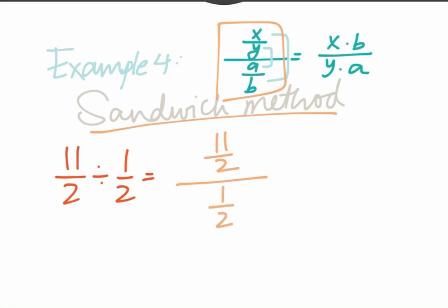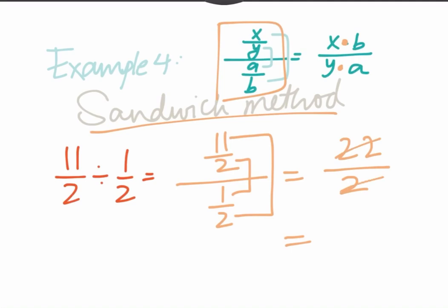You write it down as 1 divided by 2. Now what you're going to do is multiply the ends, and multiply the inner part. So 11 and 2 are like your bread in the sandwich, so that goes on top — 11 multiplied by 2 is 22. And the inner part of the sandwich, which is your cheese, fries, hamburger — whatever — goes below the bread, which is 2 multiplied by 1 is 2. Then you simplify, and you get an answer of 11. Just remember: the ends are the bread, and the inner fillings go below.